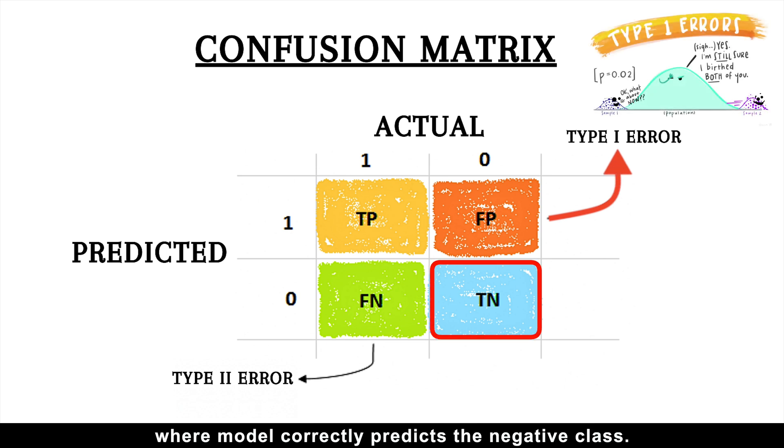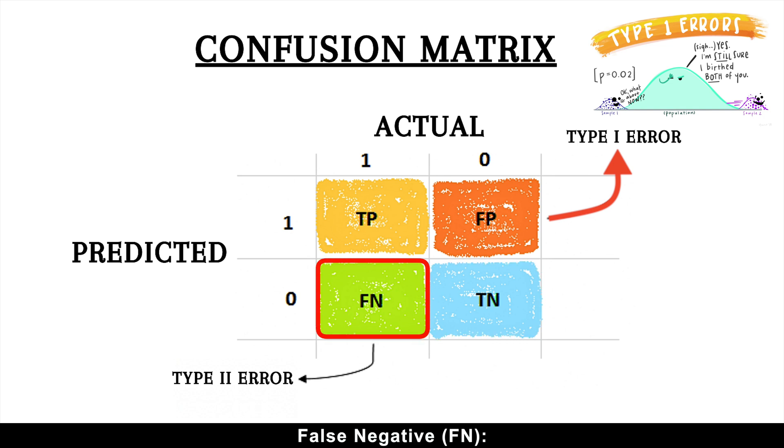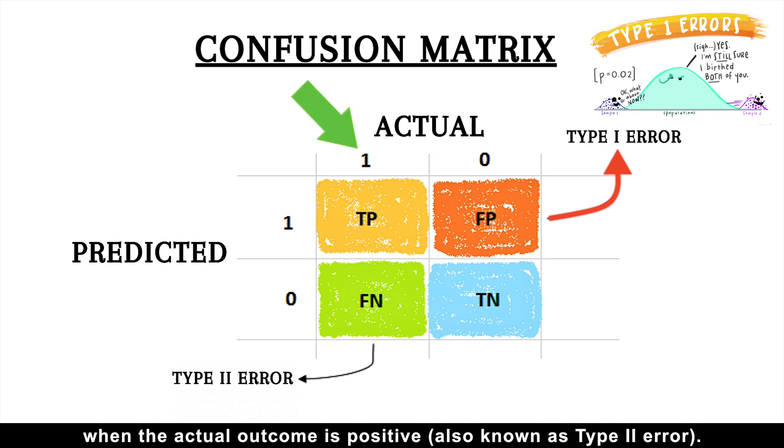True negative, where the model correctly predicts the negative class. And false negative, where the model incorrectly predicts the negative class when the actual outcome is positive, also known as Type 2 error.